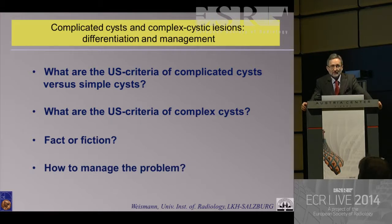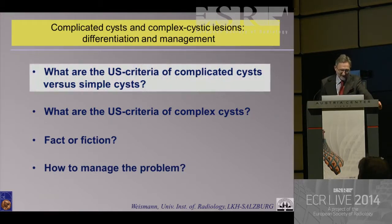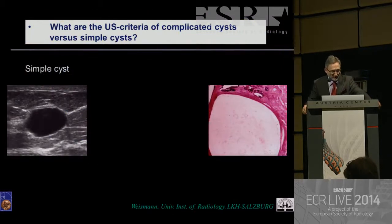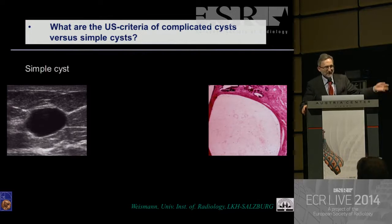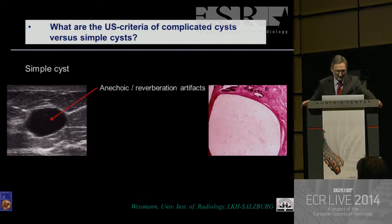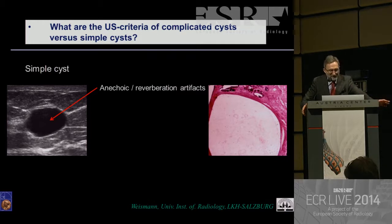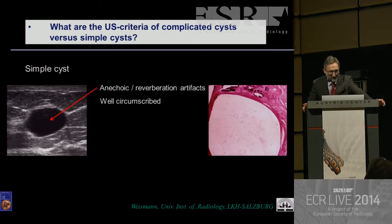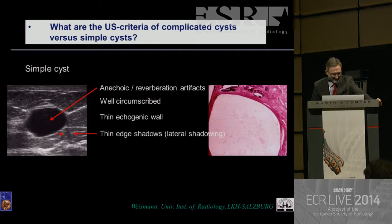Last but not least, how to manage the problem? Let's start with the first question: what are the ultrasound criteria of the complicated cysts? We have to compare with the simple cyst criteria — typically anechoic, no reverberation artifacts, maybe a visible situation, a well-circumscribed lesion, thin echogenic wall, and thin edge shadows.